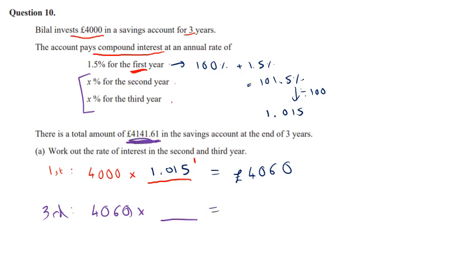Now this time, though, I know what the amount is in the account at the end of the three years is £4,141.61. And so this is basically an equation that needs solving.